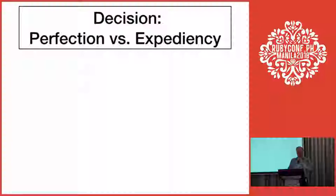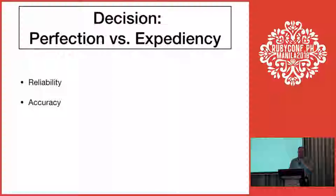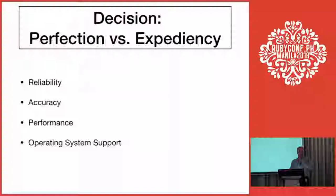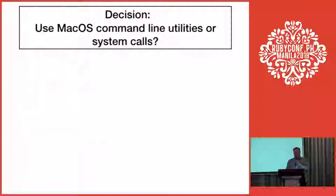You'll also need to decide between perfection and expediency. I realized I didn't want to spend my entire life writing this, so I needed to decide where and when to compromise. There are several dimensions: reliability and accuracy; performance — since I was doing this in human time, performance is not that important; OS support — I would have liked to support many OSes but started with only one; and automatability — being able to script multiple things at once.